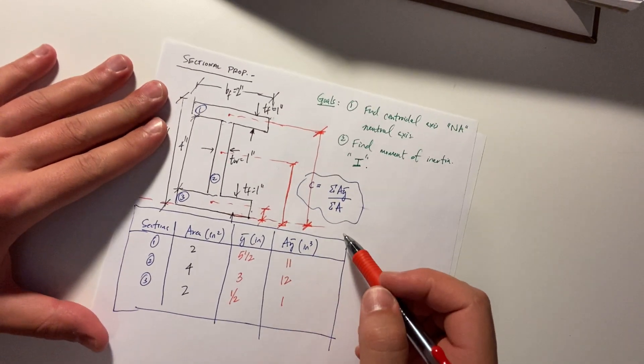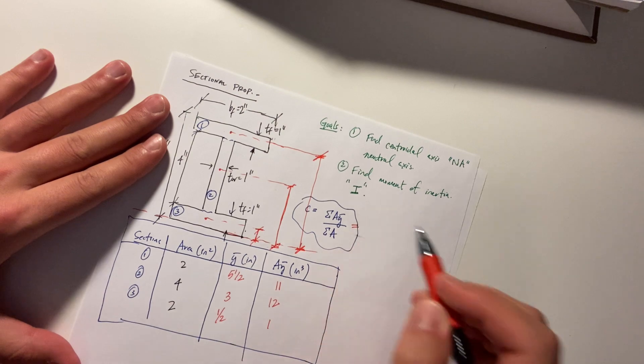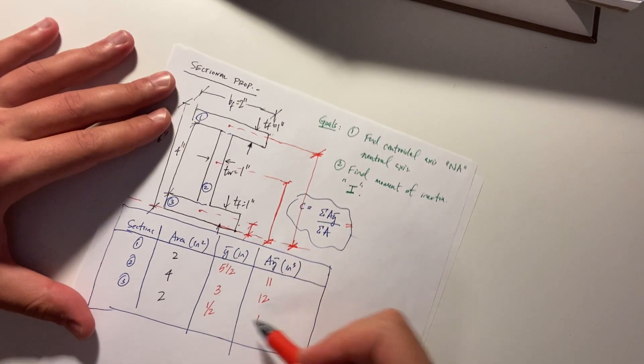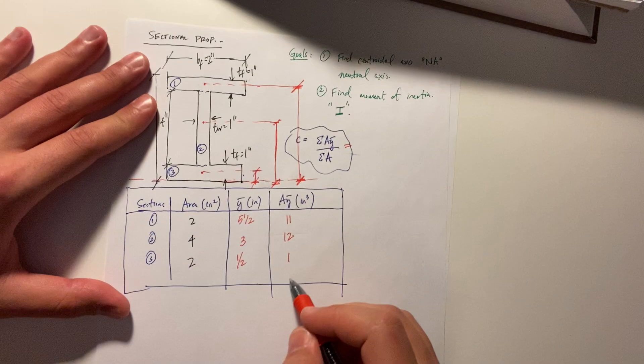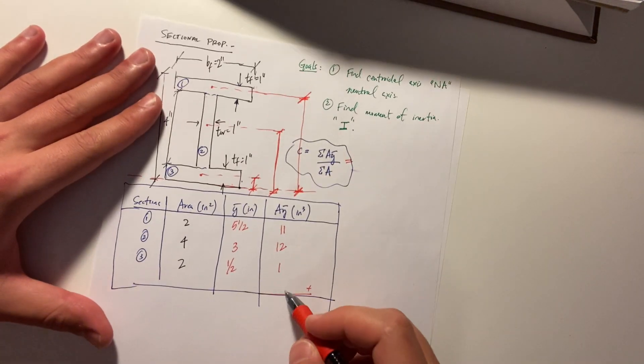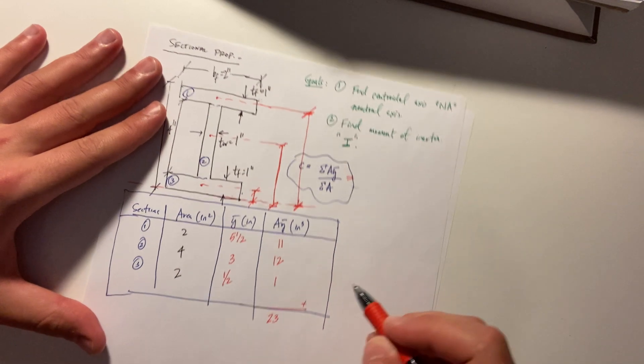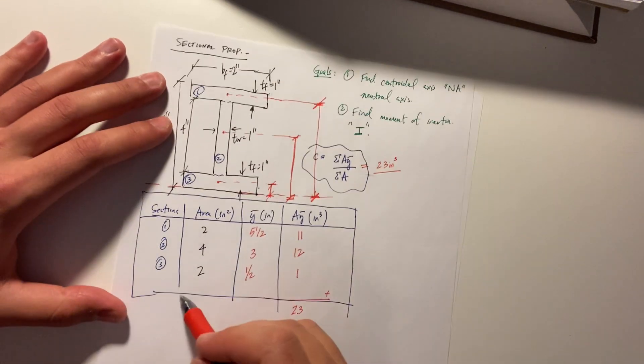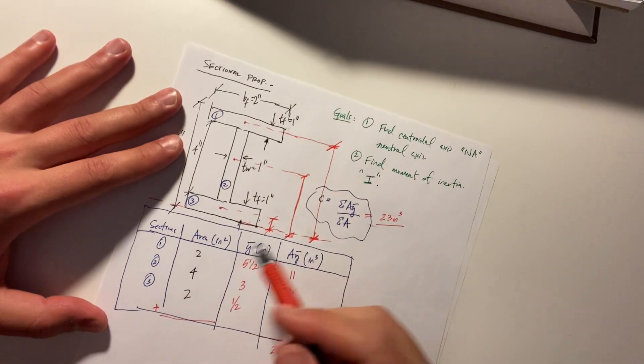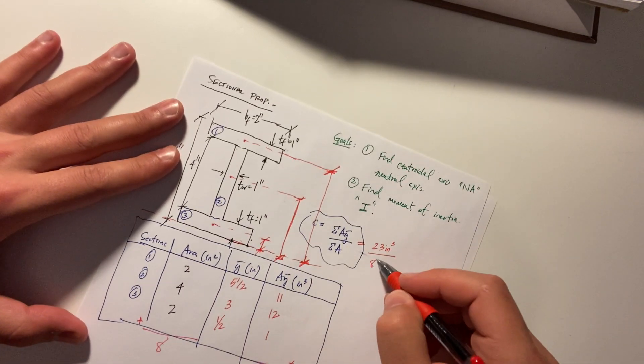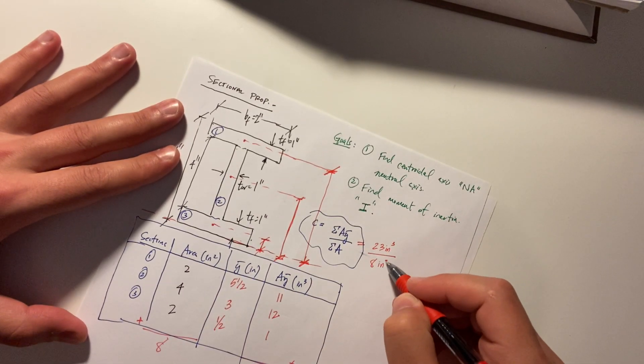Now, let's find the centroid. Let's go back to this guy. Okay. A Y bars. Summation. All right. Summation. 13 plus that. 23 inches cubed. Area. Eight inches squared.